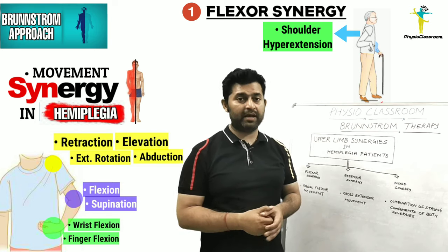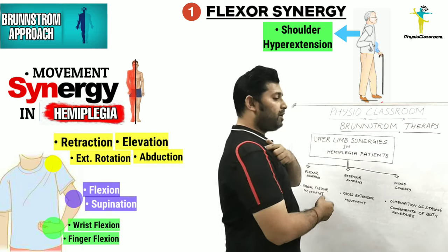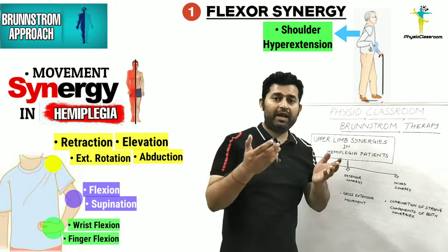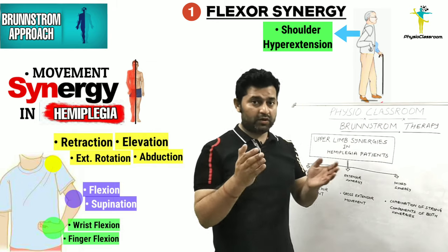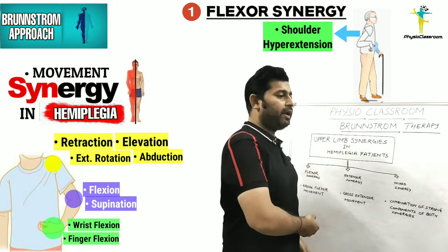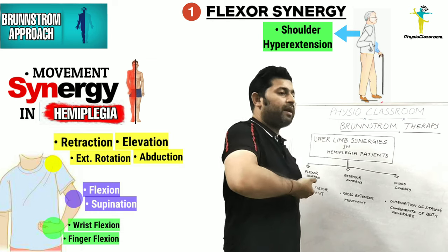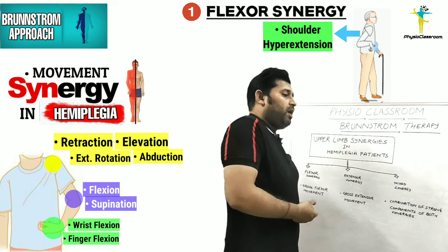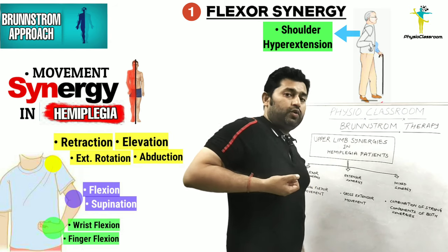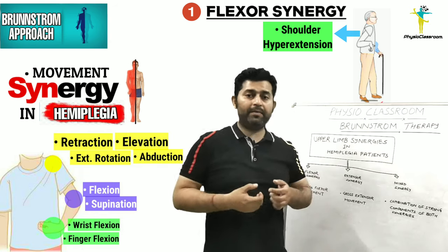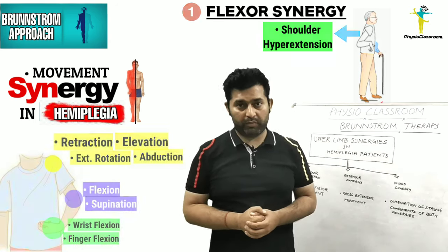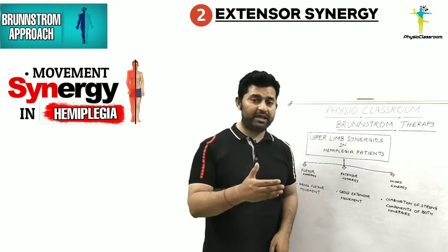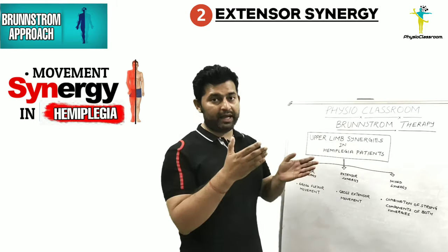It is also important to note that some stroke or hemiplegic patients might display shoulder hyperextension during the performance of the upper limb flexor synergy. This means that rather than going into more abduction and external rotation, these patients might go into more extension during the performance of the upper limb flexor movement.